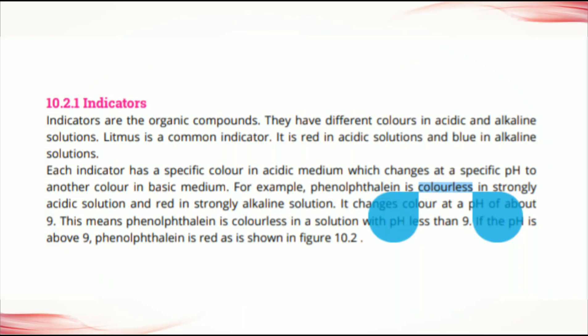For example, phenolphthalein is colorless in strongly acidic solution and red in strongly alkaline solution. The color of phenolphthalein in acidic solution is colorless — no color — and in basic solution the color of phenolphthalein is red. It changes color at a pH of about 9.